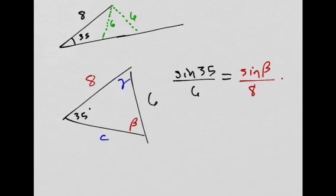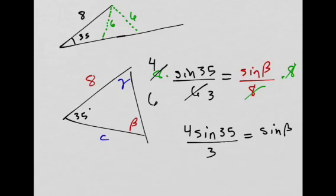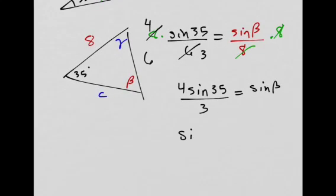And then I can solve for sine of beta. So I'll multiply both sides by 8. I can reduce this by dividing by 2. It becomes 4 and 3. So I have 4 sine of 35 degrees divided by 3. And that equals sine of beta. So I'm just going to rewrite it. Sine of beta. And if I plug this into a calculator, I would get 0.76.